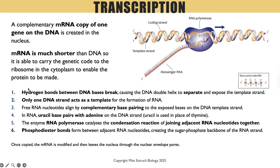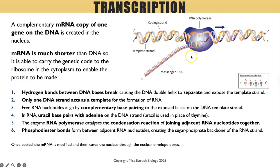Here is the exact mark scheme answer you'd need to give when describing transcription. Number one: hydrogen bonds between the DNA bases break. This refers to the hydrogen bonds between complementary base pairs in the double strand, and breaking those hydrogen bonds causes the DNA helix to unwind and the two strands to separate. Only one of those strands is going to act as a template.